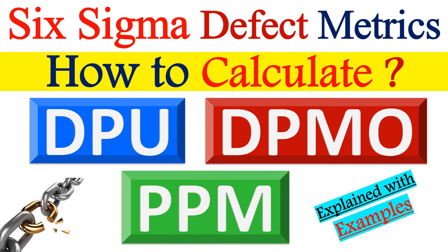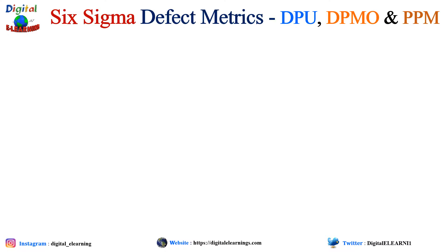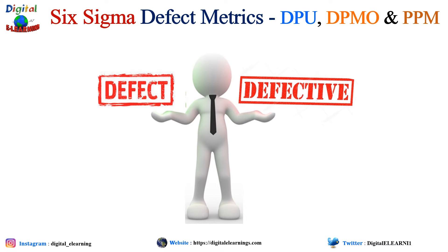This is session 6 on the Sigma defect metric. We look at what is DPU, what is DPMO and PPM, and how to calculate all three with the help of some animated examples. Before we deep dive into DPU, DPMO and PPM, let us first understand these two terms: defect and defective.